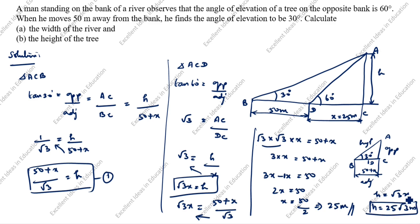You can substitute x value, x value is 25, so 25 root 3 meters. This height of the tree value is 25 root 3 meters.